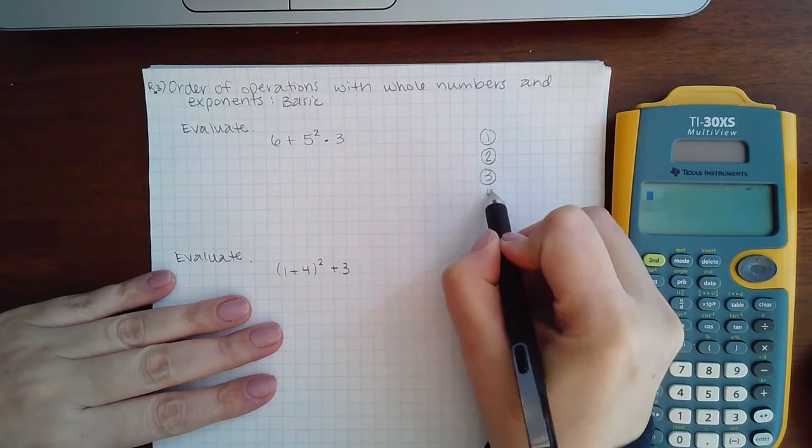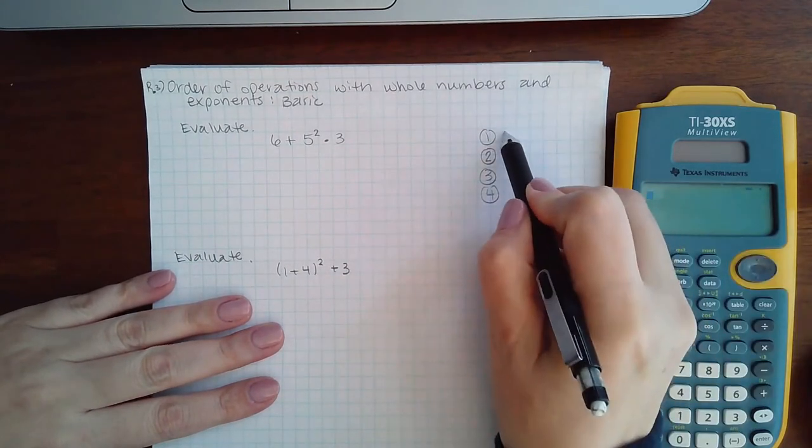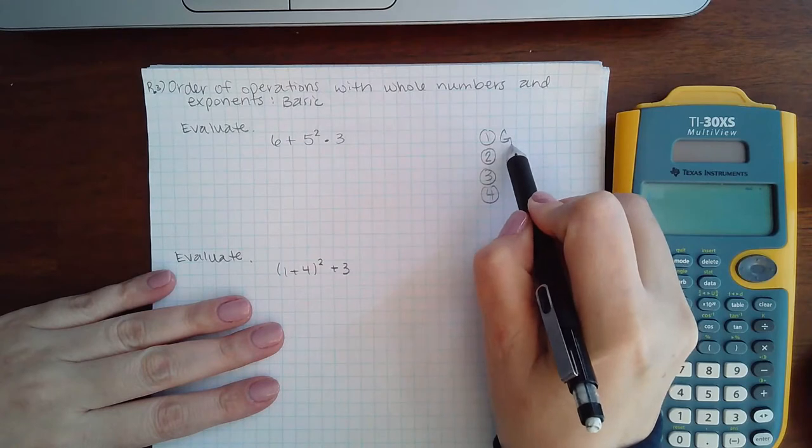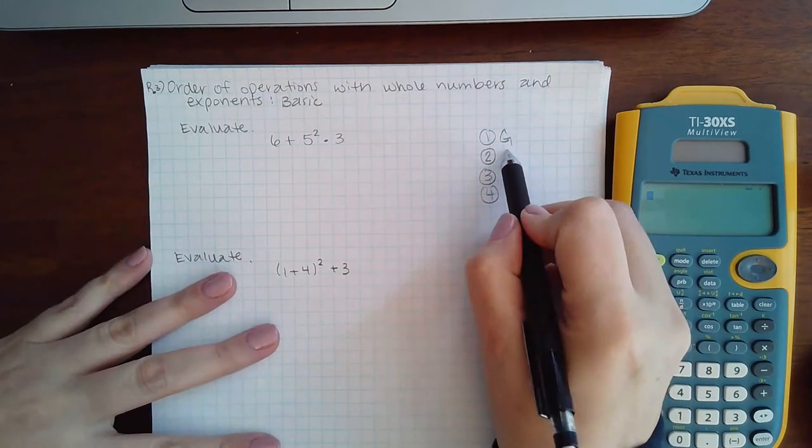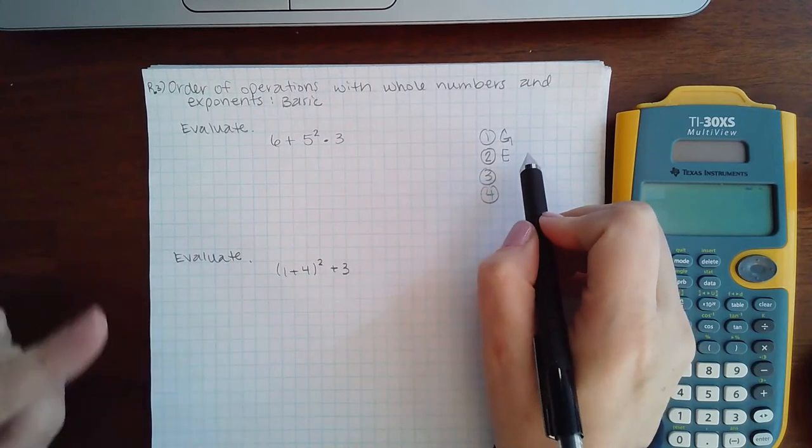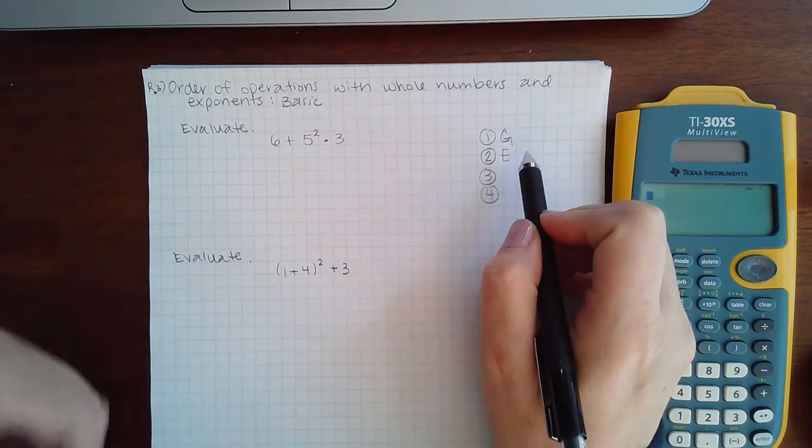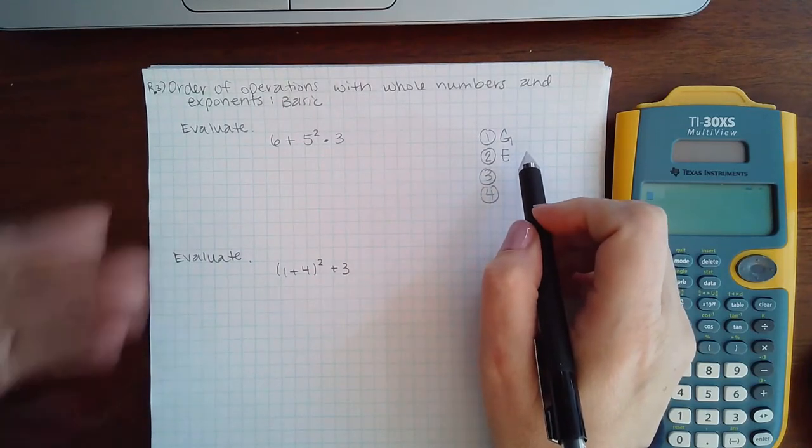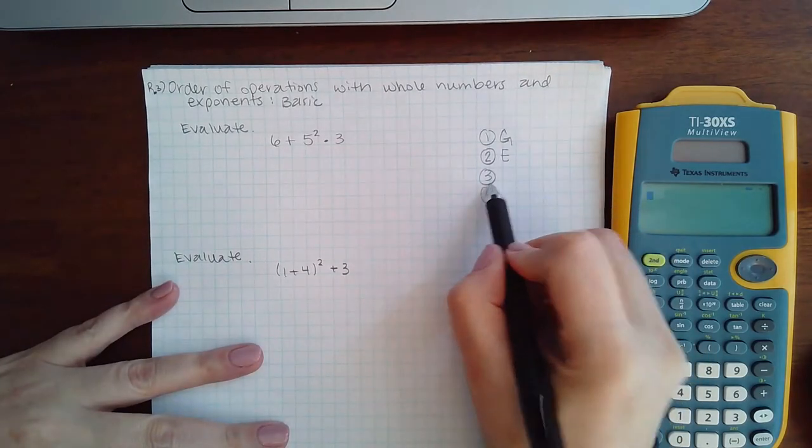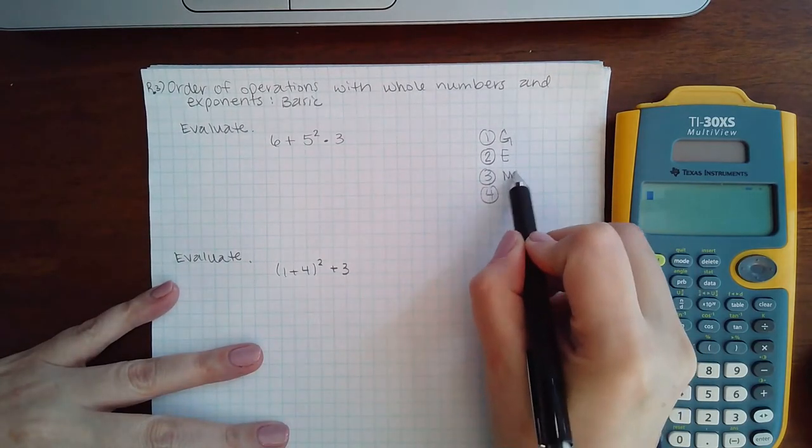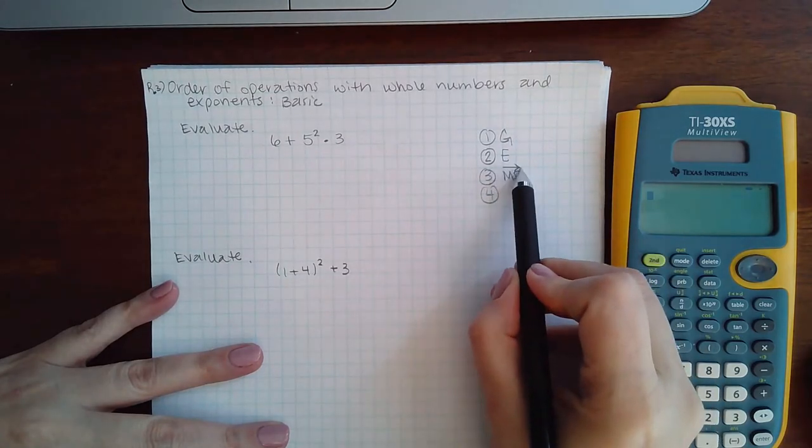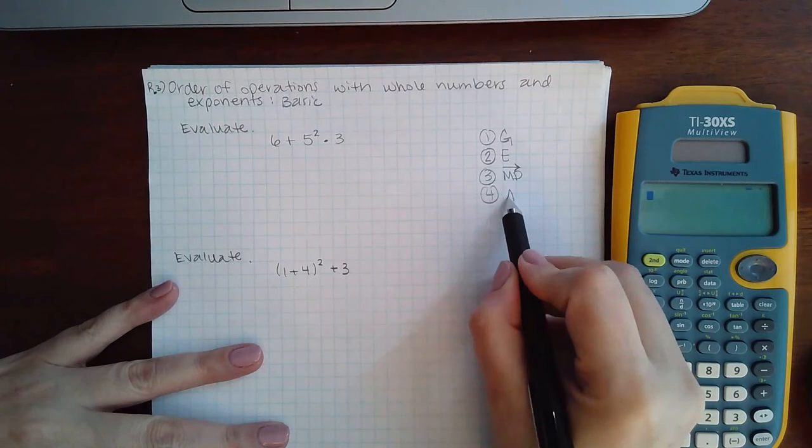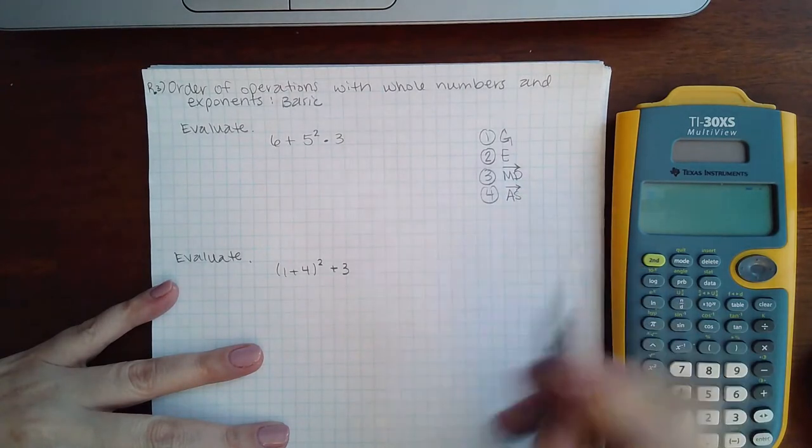I remember G for groups, which was the parentheses, the brackets, so on and so forth. Then E for evaluate, and you evaluate exponents, fractions, square roots, absolute values, things like that. Three is multiply and divide, but I always put an arrow at the top to show me I'm going from left to right. And then the last step is add and subtract going from left to right.